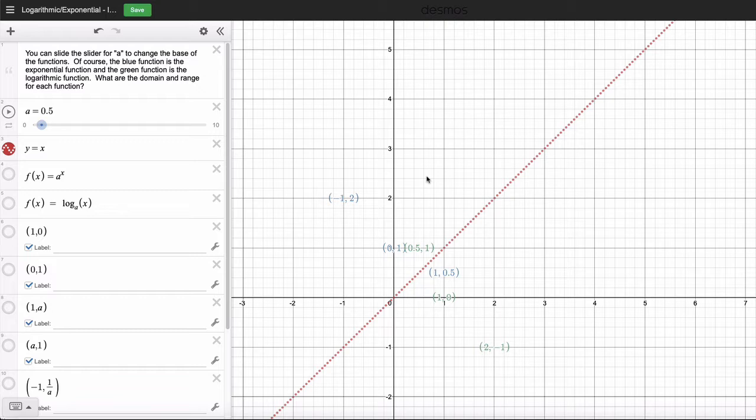So if I have e to the 7 and I take the natural log of e to the 7, the 7 can be written as the coefficient, and then natural log of e is 1. You can also say that they undo each other, and you're just left with the 7. The exponent 7 is what gets left if you use the logarithmic function as the inverse of an exponential function.